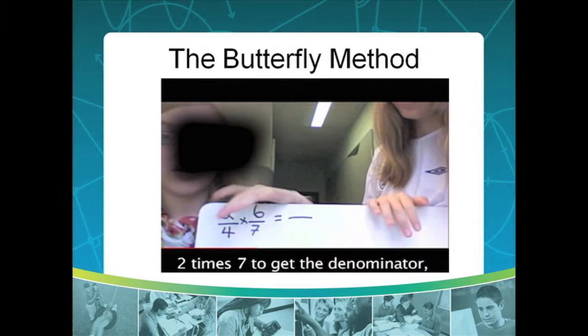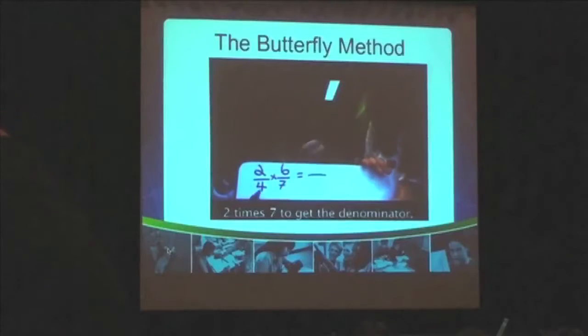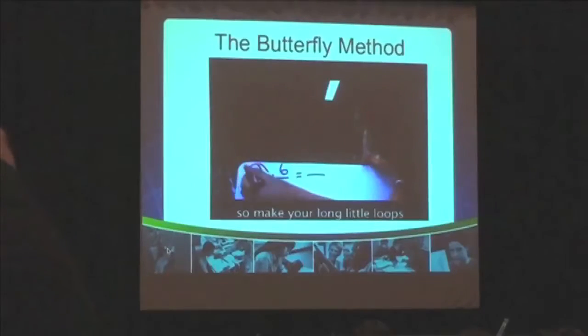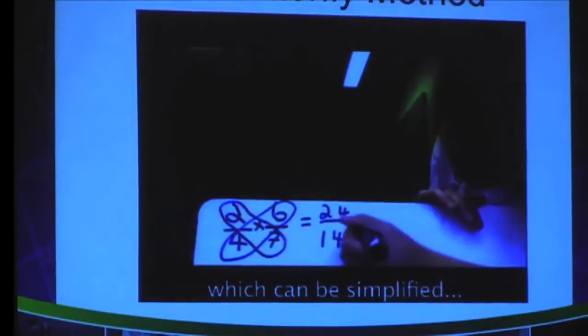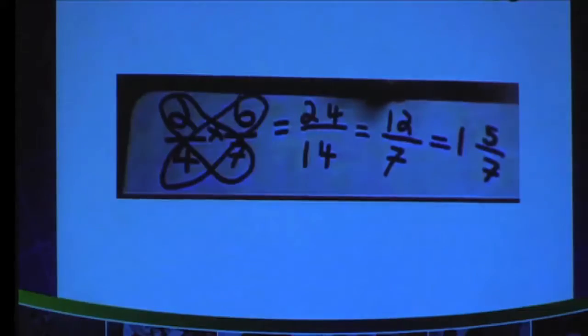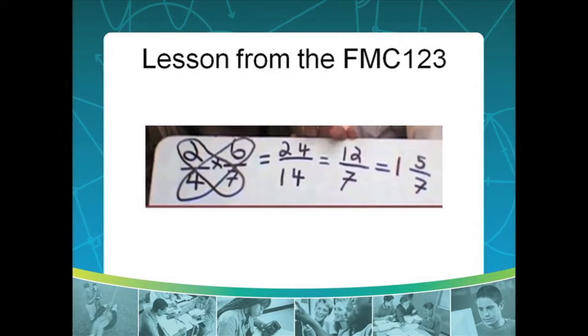2 times 7 to get the denominator. So make your long little loops to make it look like a butterfly — see, isn't it a butterfly? That's why I call it that. So your answer is 24 fourteenths, which can be simplified. So the FierceMapTikas123 — love them. They're really good at procedures. They just didn't realize that they were applying the butterfly method to the wrong kind of fraction problem.